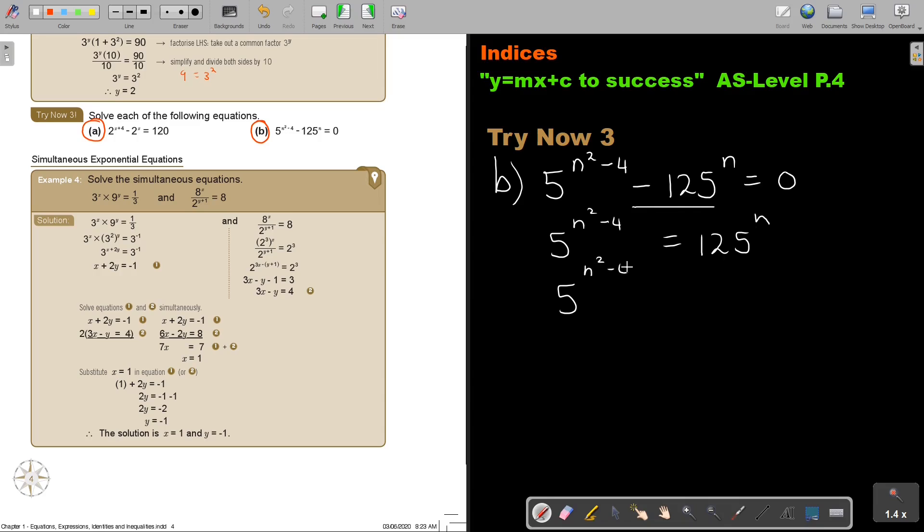So it's n squared minus 4 equals 5 to the power of 3. Multiply with that it's 3n. These and these my bases are the same. So basically now I'm just going to say n squared minus 4 is equal to 3n. Oh this is nice. This is going to be a quadratic trinomial.